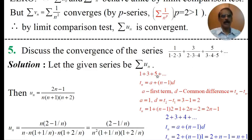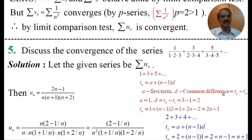To find un, consider the numerators: 1, 3, 5, ... which form an arithmetic progression. To find the nth term of this AP, we use the formula tn = a + (n−1)d, where a is the first term and d is the common difference. Here a equals 1.